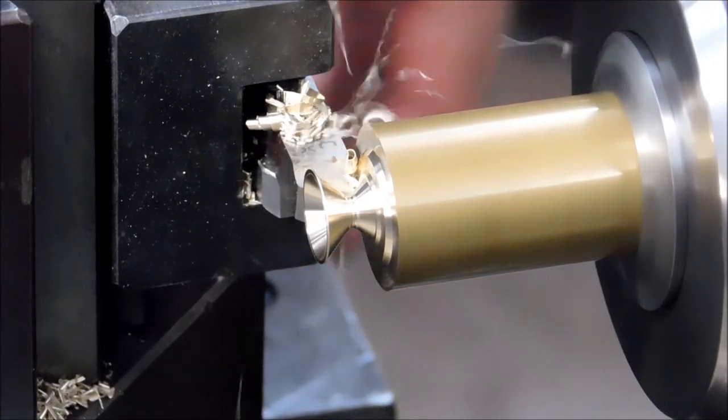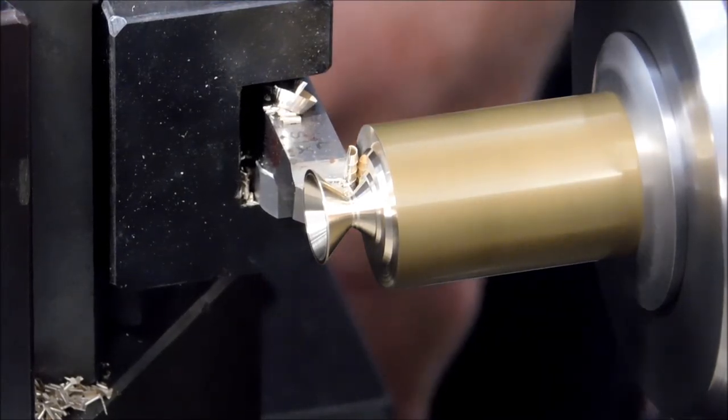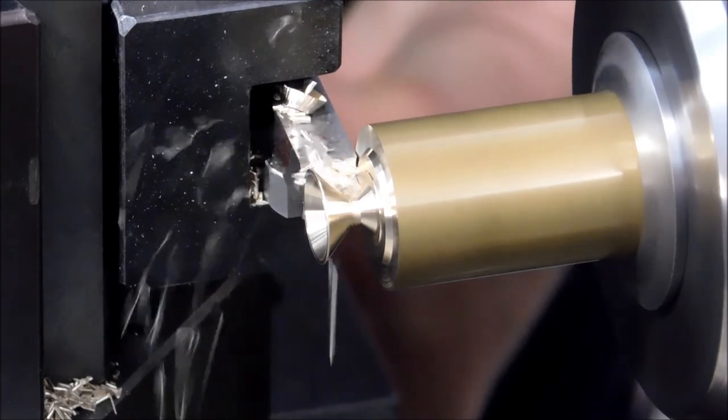As that neck diameter gets smaller, you have to be very careful how much surface contact you make or you could have the part climb up and over the form tool and blow up in your face.